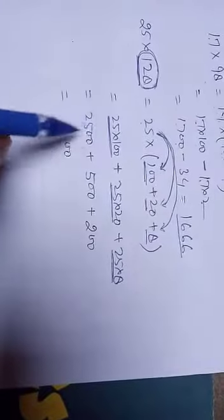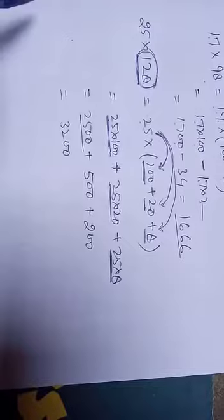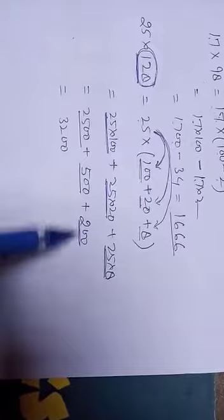Now solve these. 25 into 100, 2500. 25 into 20, you will get 500. 25 into 200. Now add these numbers, you will get 3200.